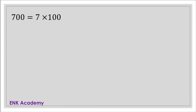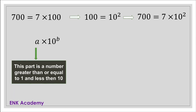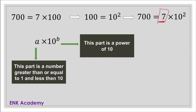Given the number 700, this can be written as 7 times 100. And we know that 100 is actually 10 to the power of 2. And thus, the number 700 can be written as 7 times 10 to the power of 2. We can define standard form as a number having two parts. The first part is a number greater than or equal to 1, but less than 10. In our case, we have 7, which is greater than 1 but less than 10. The second part is the power of 10.